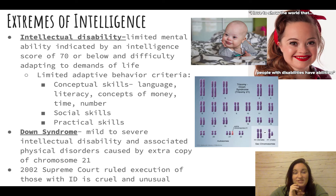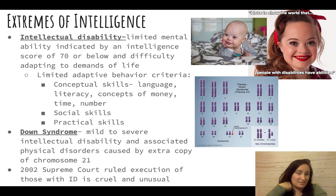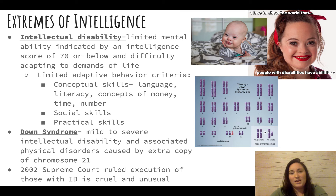At the extremes of intelligence, we have intellectual disability — a limited mental ability indicated by an intelligence score of 70 or below, and difficulty adapting to the demands of life. This can include difficulty with language, literacy, memory, understanding money and time, numbers, social skills, practical life skills like maintaining an apartment, and personal hygiene.